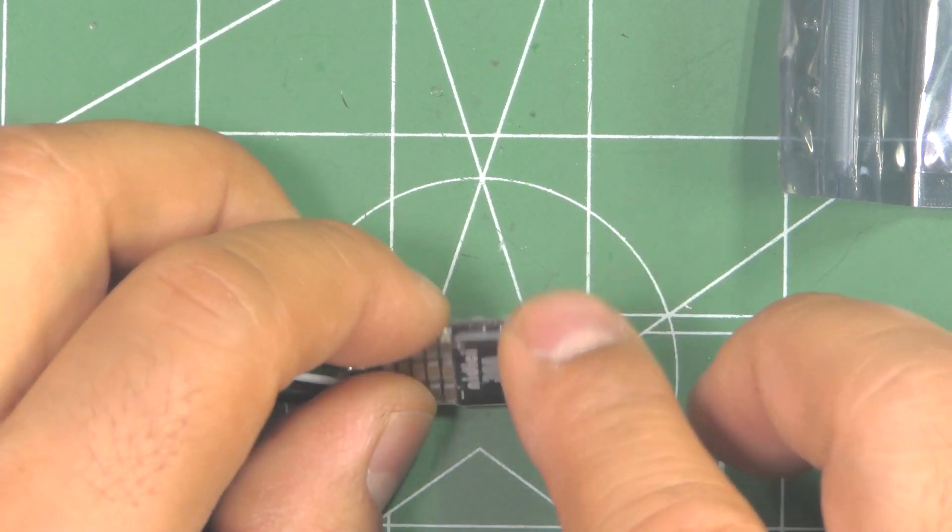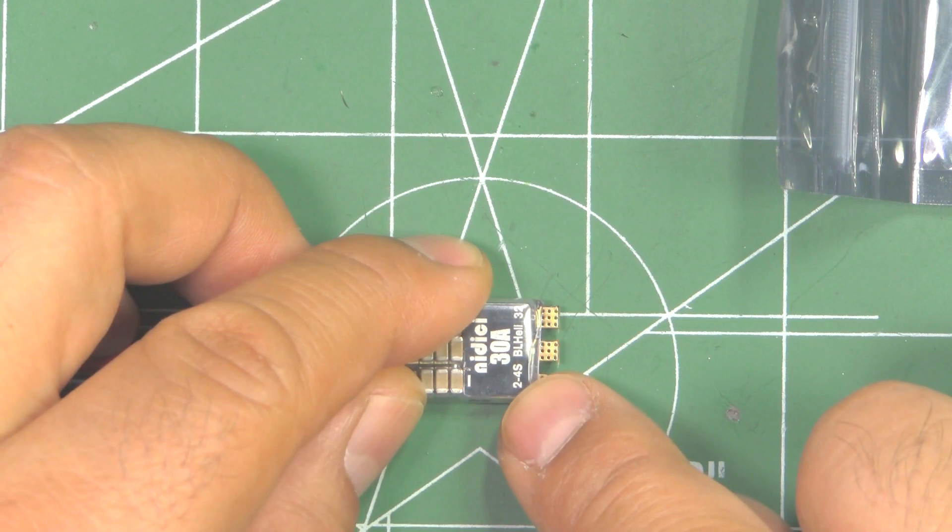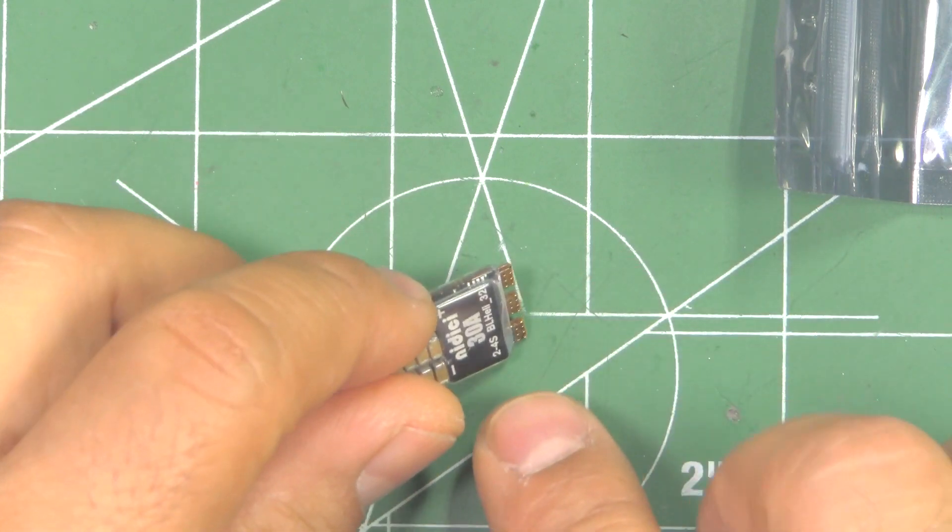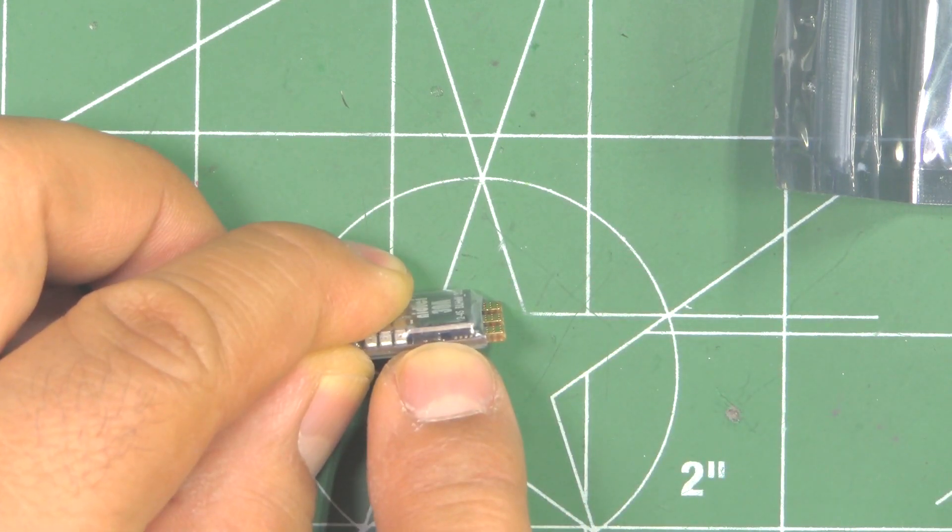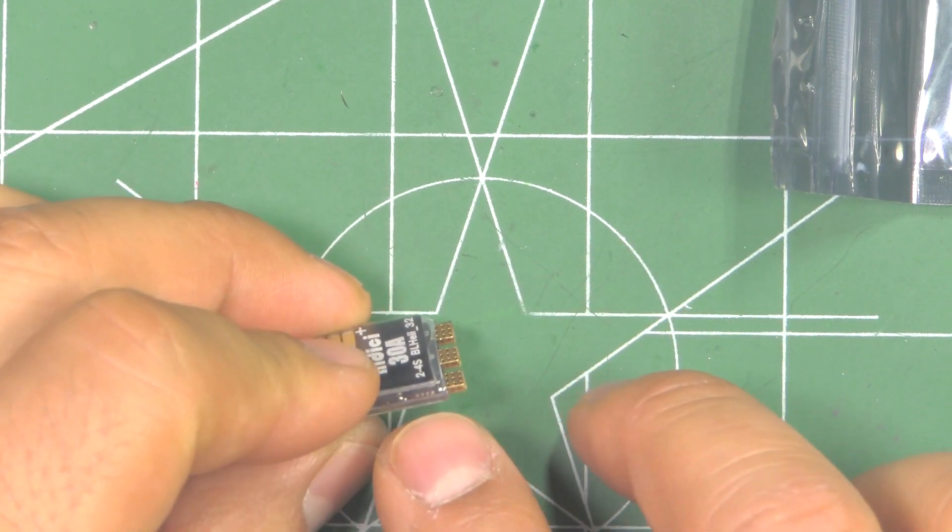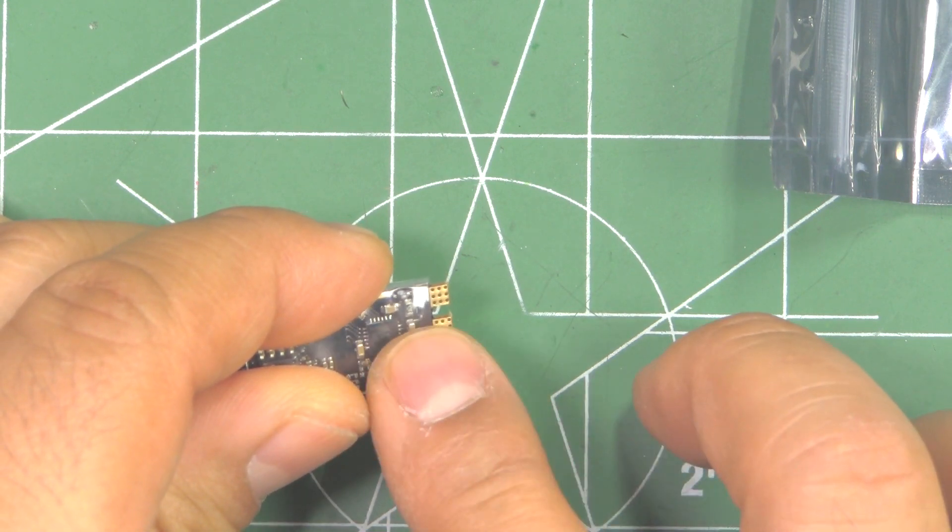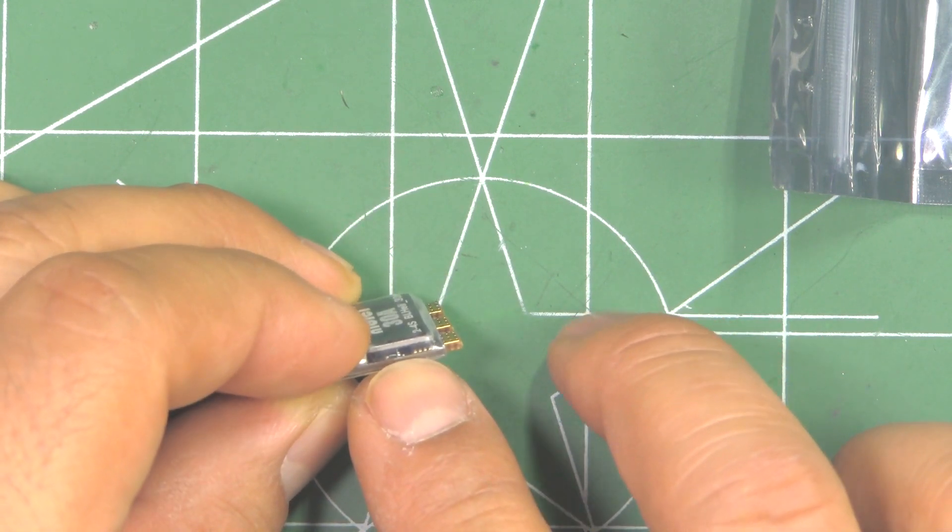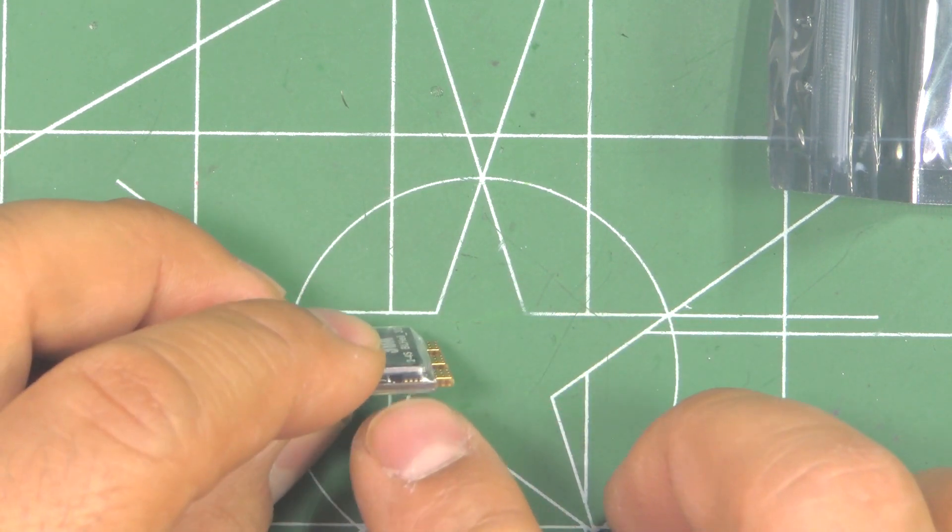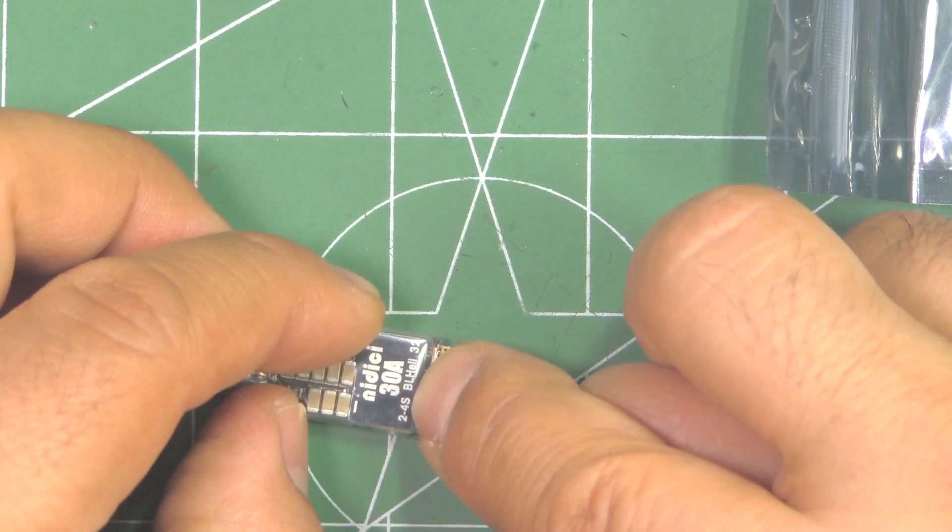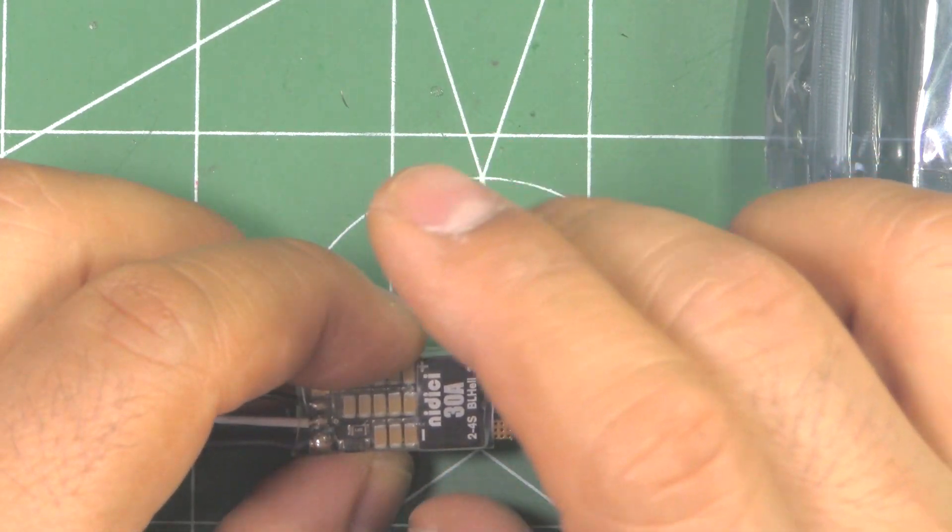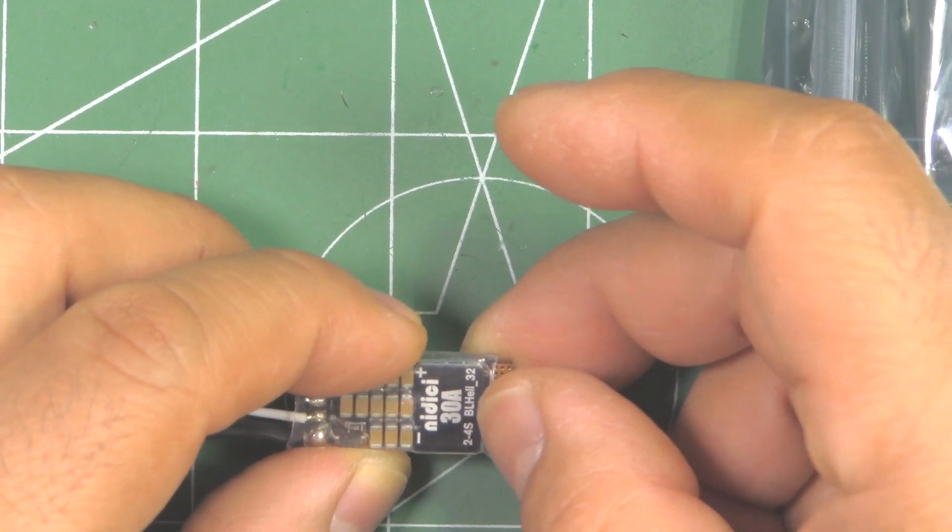Before I forget, I do want to mention something about this ESC that you have to watch out for before you connect power to it. You gotta make sure that this heat sink plate, I think it's an aluminum plate, is held in place by the heat shrink. There's also an adhesive thermal pad on top of the FETs that kind of holds the heat sink in place, but it's not very secure, so you can still move it.